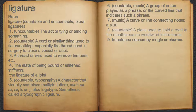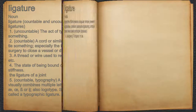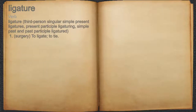8. Countable, a piece used to hold a reed to the mouthpiece on woodwind instruments. 9. Impotence caused by magic or charms. Ligature. Verb. 1. Surgery, to ligate, to tie.